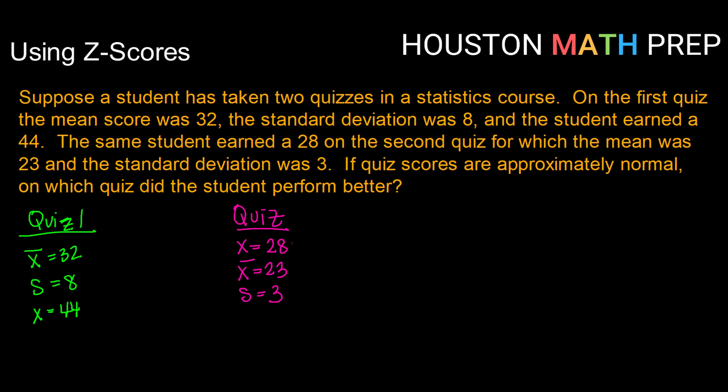We don't know that those two quizzes had the same maximum score. So we can't assume that a 44 is necessarily a better score than a 28. They're different quizzes, they may have different max scores.